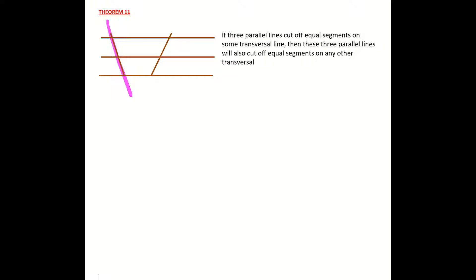In our proof we need to state some information. We need to write down first of all what we're given. We also need to state what we want to prove. Then we're going to write down our proof and then our final conclusion. So let's get in and state what we are given.